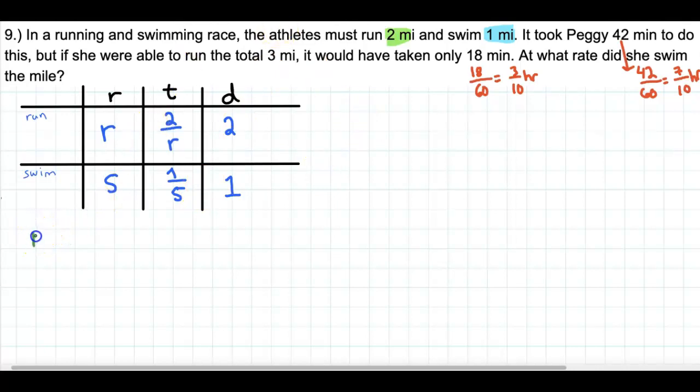So R is equal to distance over time. So that is 3 over, and it was only 18 minutes, so that's 3 tenths of an hour.